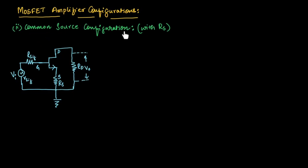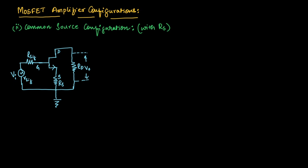Now let us understand common source configuration with resistance RS. This circuit is similar to common source configuration, except we connect a resistor RS across the source terminal. Always remember: when connecting a resistor across the source terminal, use the hybrid T model as the small signal equivalent model. If no resistor is connected across the source terminal, use the hybrid pi model. Since we have RS across the source terminal here, we take the hybrid T model.